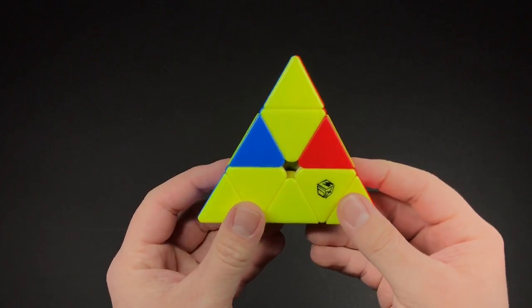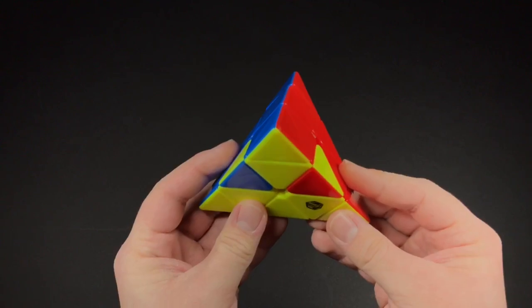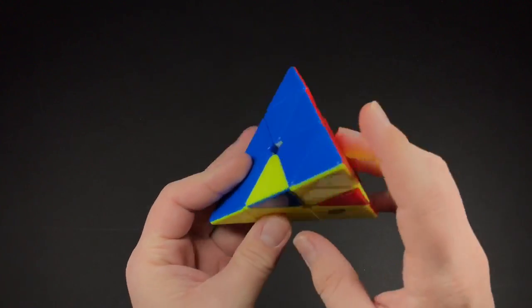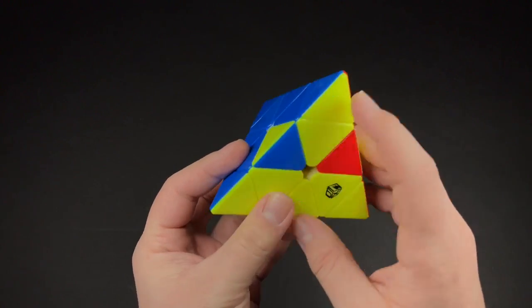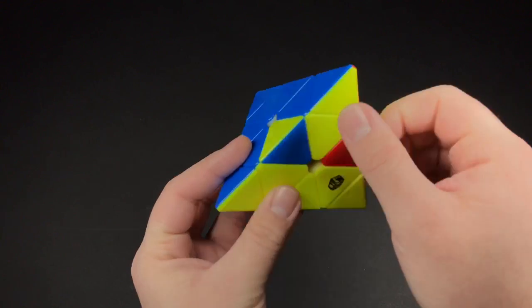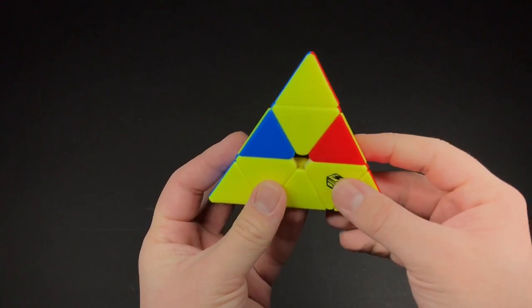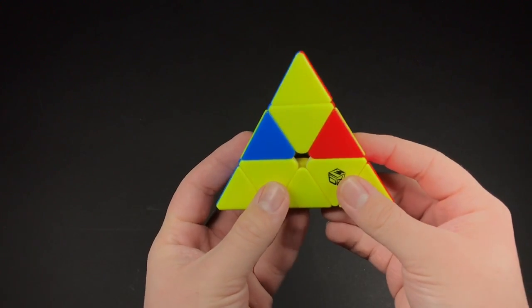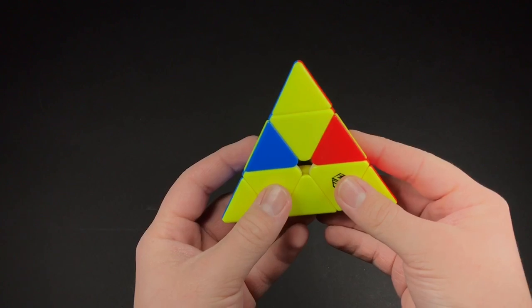Okay, this case, this is actually my favorite case for the Pyraminx. So you have one edge solved, and then this one is flipped, and then this one is flipped. And so how you finger trick it is like this.